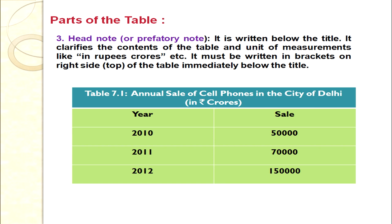Next we discuss the head note. As you can see in the example, the head note is written in brackets — for example, 'in rupees crores.' The head note is written just below the title in brackets. Its purpose is to clarify the content of the table and give the units of measurement. It must be written in brackets on the right-hand side at the top, immediately below the title.